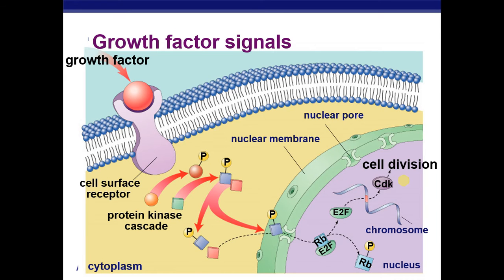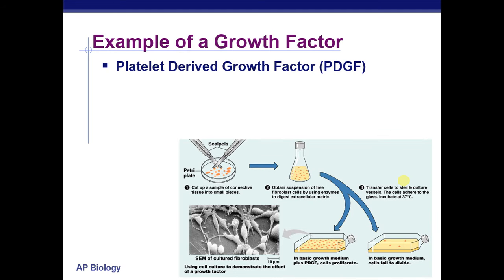Last time we were talking about the internal and external signals that can push a cell past checkpoints and into mitosis. We had talked about cyclins and cyclin-dependent kinases as internal signaling molecules, and we left off talking about growth factors as external signaling molecules — including that they are density dependent and anchorage dependent, so a cell can't just be floating through the bloodstream and start replicating.